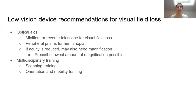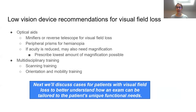Other considerations in patients with visual field loss revolve around training. Some patients with field loss will require scanning training to develop systematic strategies to locate and find things in the environment and move their eyes in a specific pattern to localize items. Patients may also require orientation and mobility training, where they learn non-visual skills to compensate for their visual field loss and better navigate their environment. We'll touch more on orientation and mobility training throughout our cases.